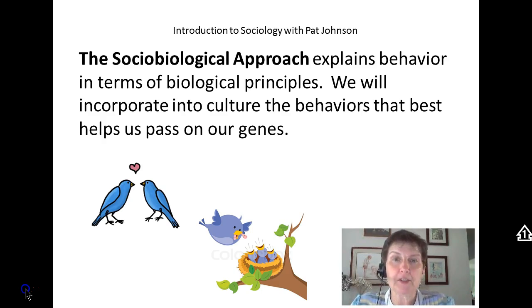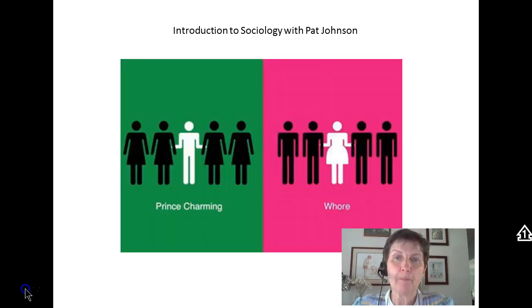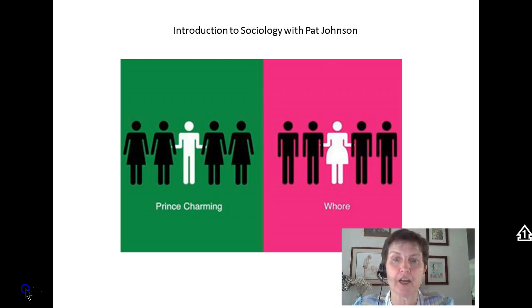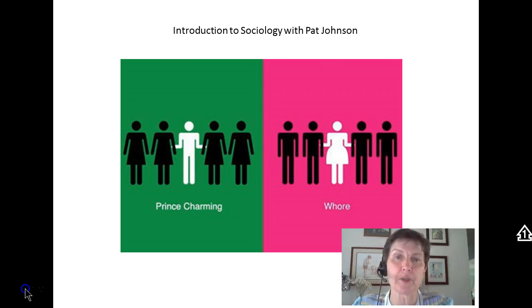In humans, most cultures have what is considered a sexual double standard. What do we mean by a sexual double standard? When we look at human behavior, most women who have multiple sexual partners are viewed in a negative manner. As this picture diagrams, they're often called things like whores. While males who have numerous sexual partners aren't seen so negatively, and as this picture shows, they're called things like Prince Charming.